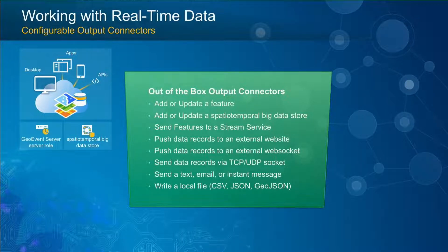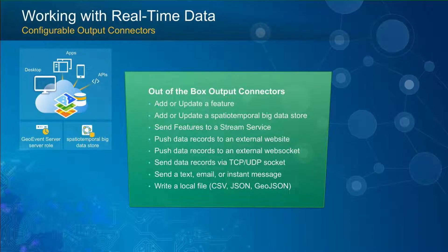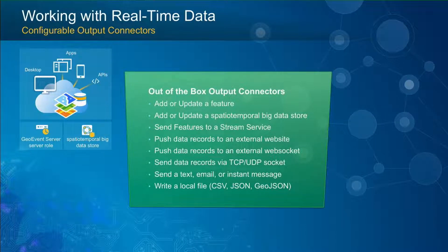You can also push data back to an external website. One example being showcased this week involves a business partner called CityWorks bringing in data from Waze — a popular traffic data provider. They bring that data into GeoEvent Server and look for certain patterns, specifically things like potholes on the roads or missing highway signs. When those patterns are detected, they send a service request through CityWorks. Essentially all drivers in a city become knowledge workers detecting infrastructure problems.